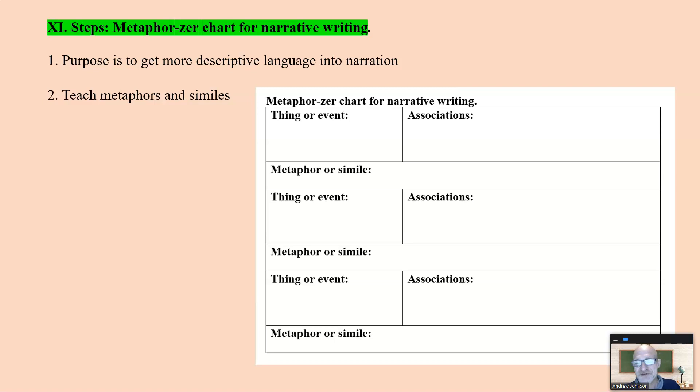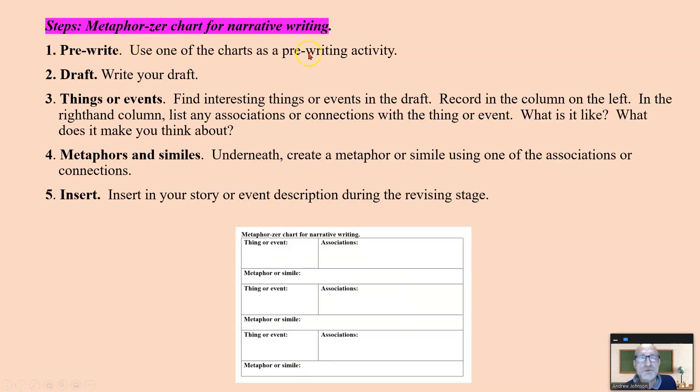Metaphorzer chart for narrative writing. The purpose is to get more descriptive language into the narration, metaphors and similes. And to do this, we use a metaphorzer. I love that word. We have the thing or event, and what you associate is like, and then you create the metaphor or simile. So you start with the thing and you associate. Remember, ideas beget more ideas. So you have this nice metaphorzer, and then you create the pre-writing, the draft. And after the draft occurs, then you find interesting things or events to add into the draft. You associate and you create the metaphors. And metaphors go places where single line descriptions cannot. It adds depth. The metaphor says something that words cannot. It gets you right to it and then describes. That's why we use metaphors and similes.